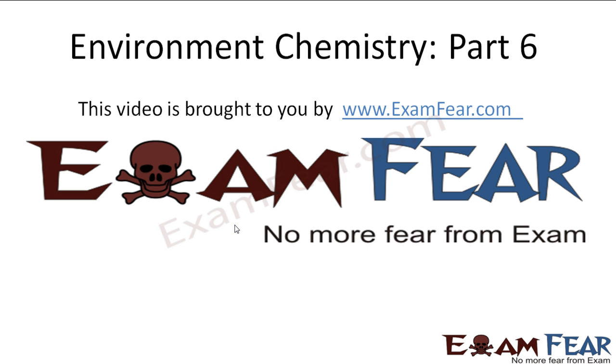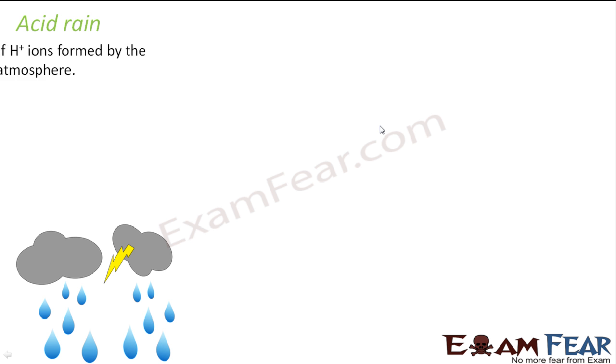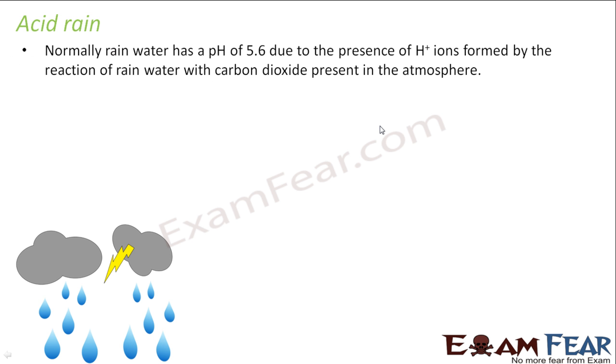Hello friends. This video on environment chemistry part 6 is brought to you by examphia.com. So what do you think? What is the pH of normal rain? In normal rain, the pH is normally 5.6.